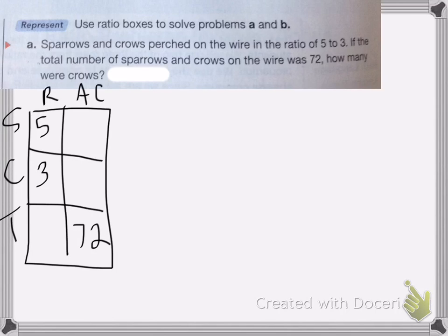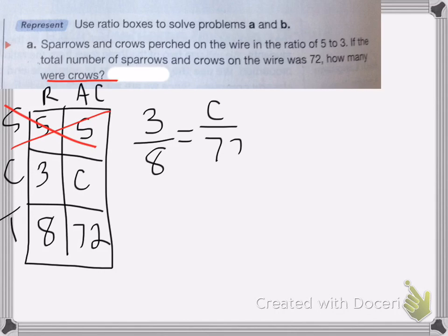So my total here for the ratio, I'm going to add 5 plus 3 is 8. And then I don't know how many sparrows there are and I don't know how many crows there are. So I'm going to look back. It wants to know how many were crows. So I can cross off the sparrow. I don't need to know that one. So I'm left with 3 eighths equals c over 72.